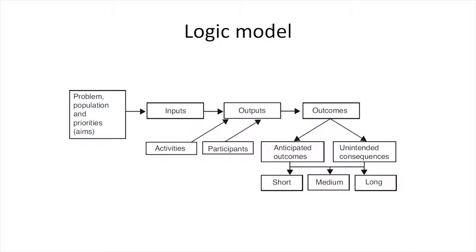The model next describes the inputs, and these include people, work methods, equipment, materials, environment and measurements. It also describes how we'll go about improving care in terms of who will involve the participants, what they will do to bring about improvement — the activities — and what we wish to achieve in terms of processes, the outputs that are intended or have been shown to lead to longer-term benefits. The benefits are described in terms of health or wider gains as possible harms, the outcomes, whether intended or unintended, and whether in the short, medium or longer term.